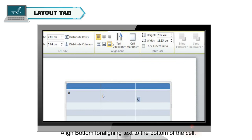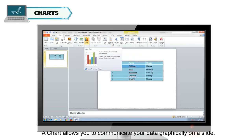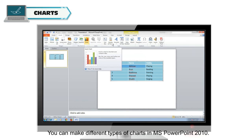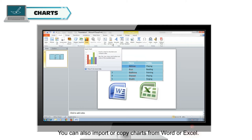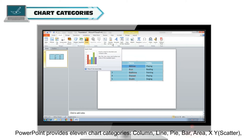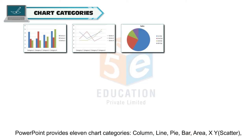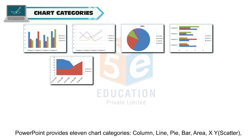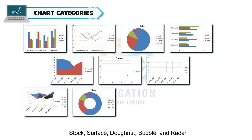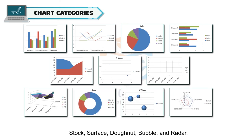A chart allows you to communicate your data graphically on a slide. You can make different types of charts in MS PowerPoint 2010, and can also import or copy charts from Word or Excel. PowerPoint provides 11 chart categories: Column, Line, Pie, Bar, Area, X Y or Scatter, Stock, Surface, Donut, Bubble, and Radar.